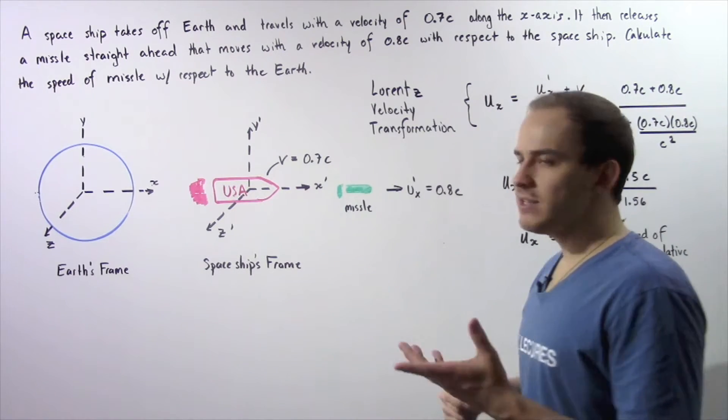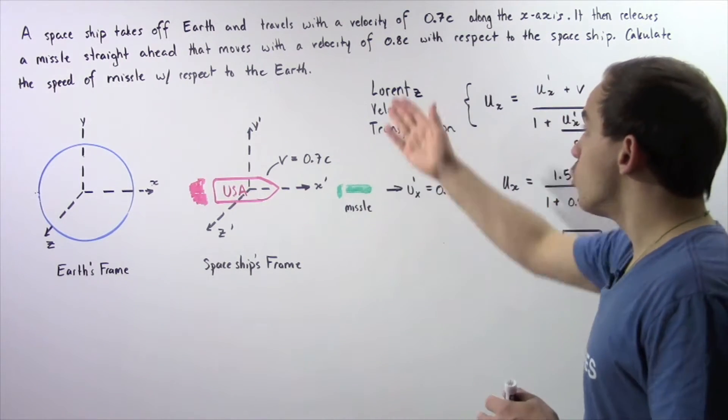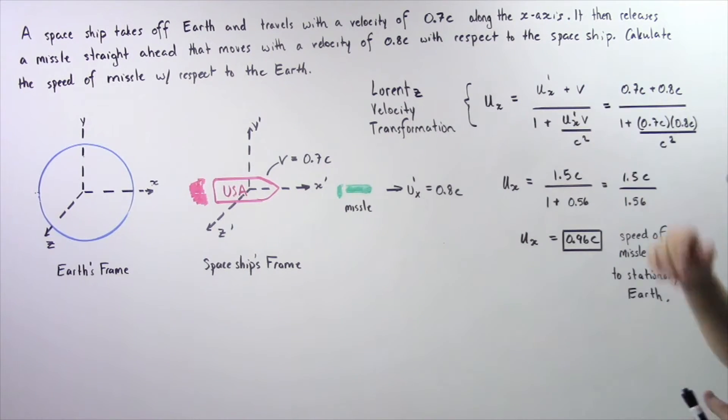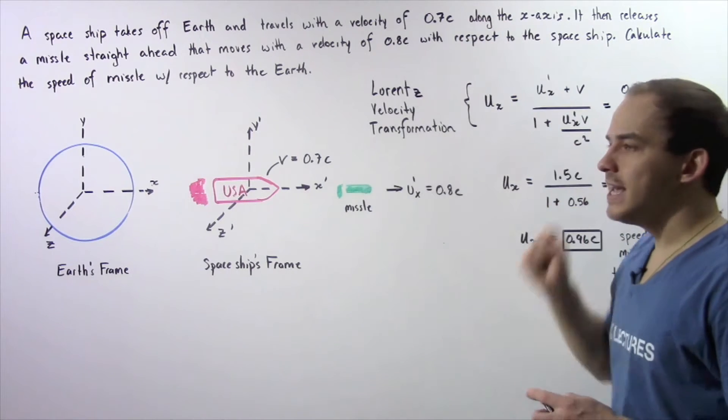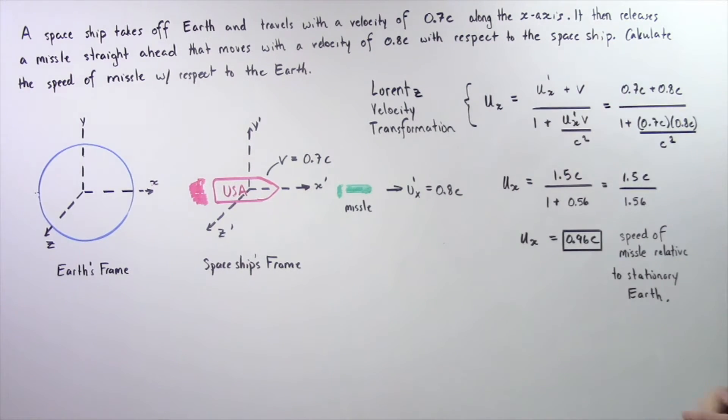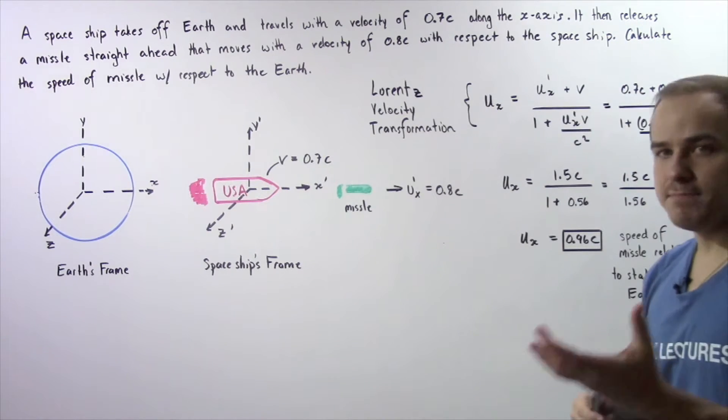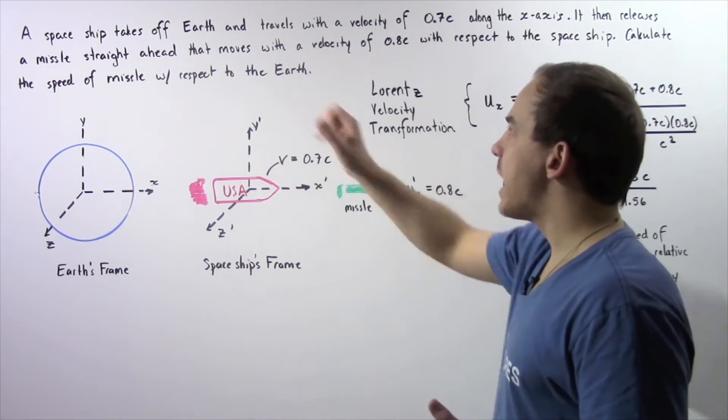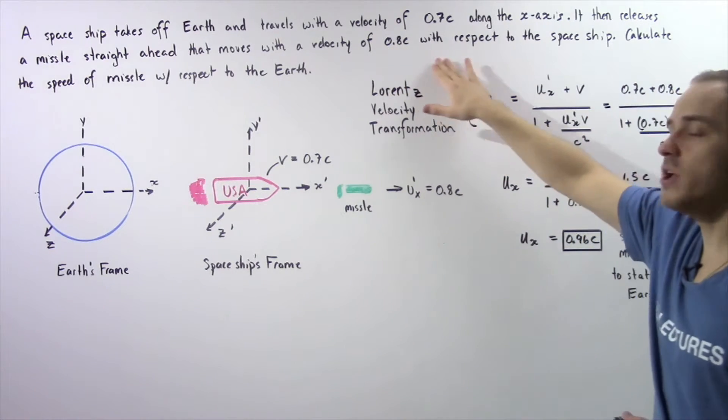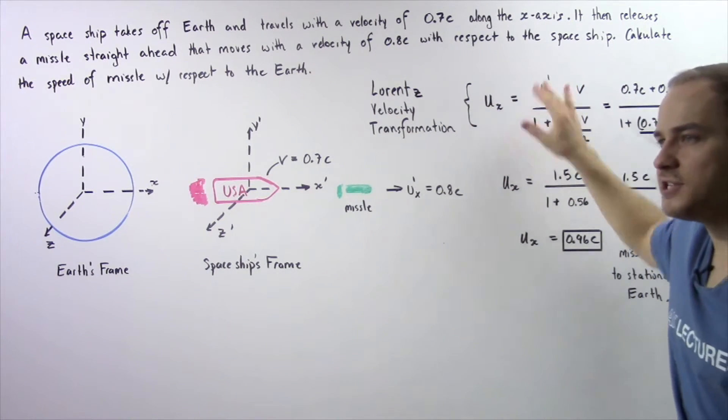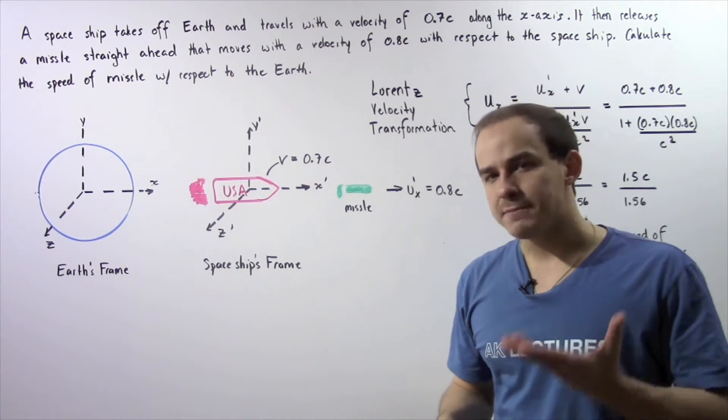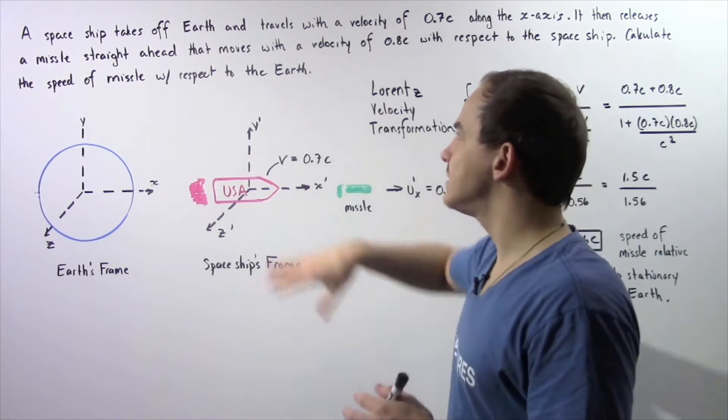A spaceship takes off Earth and travels with a velocity of 0.7c along the x-axis, where c is the speed of light constant in a vacuum. The spaceship then releases a missile straight ahead that moves with a velocity of 0.8c with respect to that spaceship. We want to calculate the velocity of that missile with respect to the Earth.